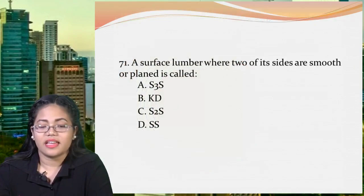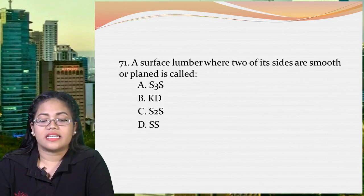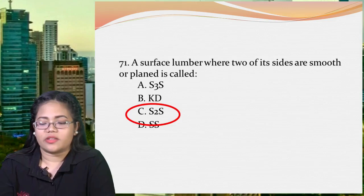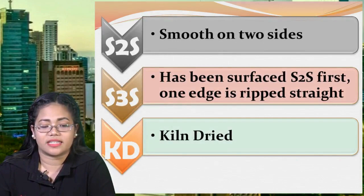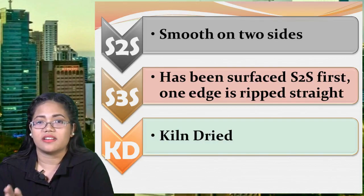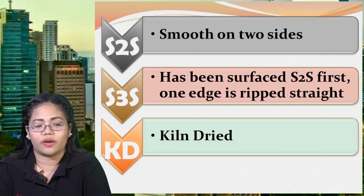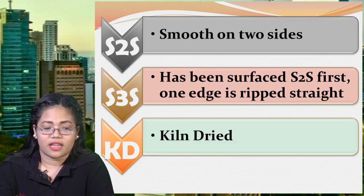Next: a surface lumber where two of its sides are smooth or plain is called A: S3S, B: KD, C: S2S, or D: SS. The answer is C, S2S — smooth on two sides, meaning both sides are planed. S3S is lumber that underwent S2S plus one edge is rip-straight or kinated. KD stands for kiln dried, which is a seasoning method. S2S and S3S are types of surface lumber, while KD is a seasoning lumber. SS has no definite meaning in carpentry.